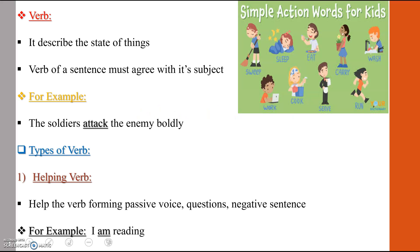Verb has been derived from a Latin word verbatim, which means the word or the most important word of a sentence. Verb is the action word. It describes the state of things. Changes of tense are directly or indirectly the changes of verb. One of the basic principles of the English language is that the verb of a sentence must agree with its subject.